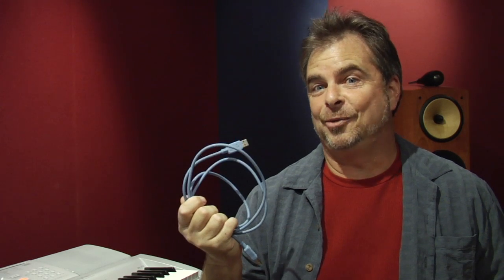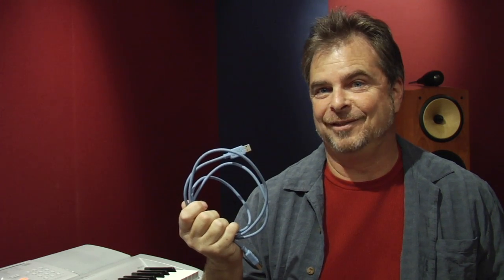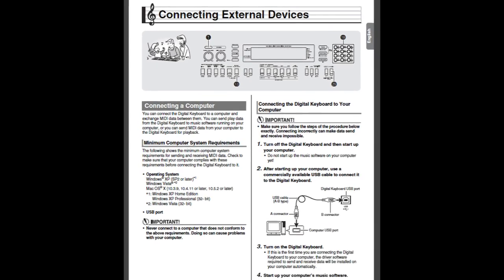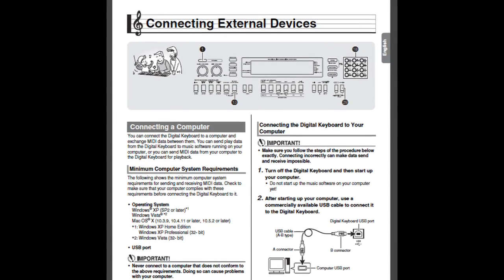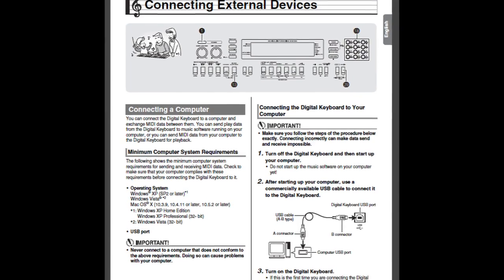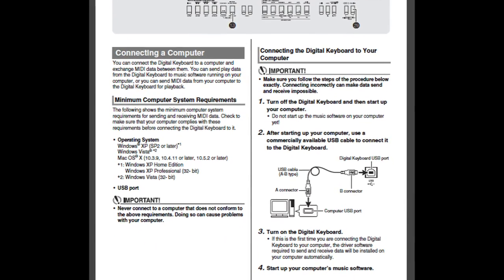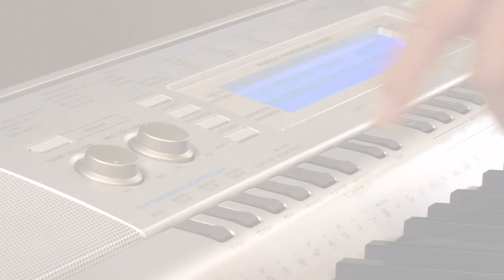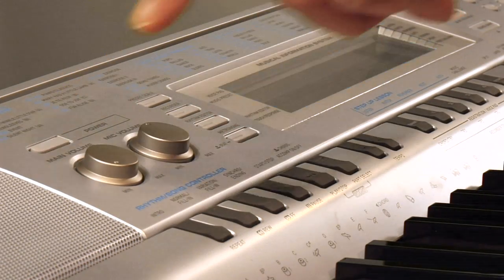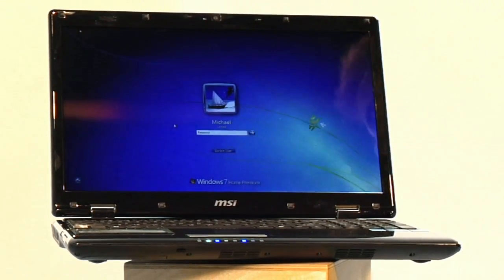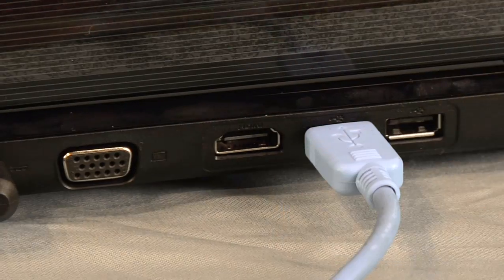I took this one from home — don't tell my wife. Here in the manual, there's a description of the process we're going to go through to connect your Casio WK210 to your computer. First, turn off your Casio and turn on your computer. Then take the USB cable and connect it from the keyboard to the computer.